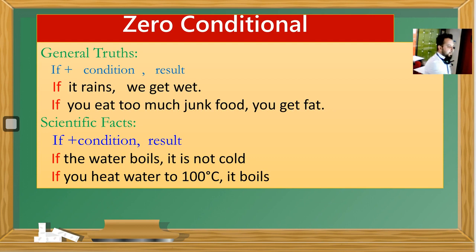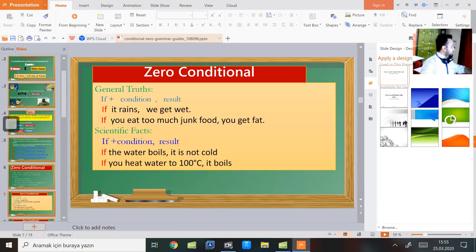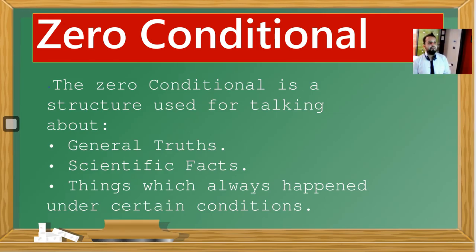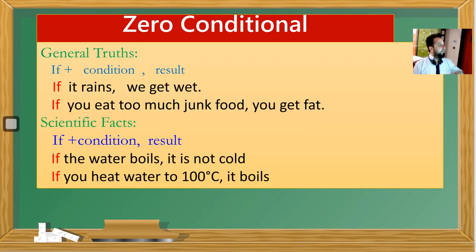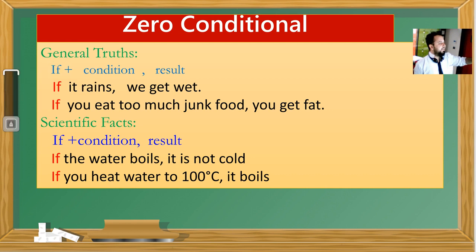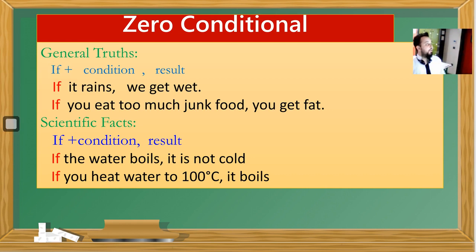Let's begin with the zero conditional. The zero conditional is a structure used for talking about general truths, scientific facts, and things which always happen under certain conditions. Yani zero conditional'ı kullanma amacımız: genel doğruları, bilimsel gerçekleri ve belirli şartlar altında gerçekleşen olayları anlatmak için kullanıyoruz. For general truths, the formulation is: if + condition, then the result clause. Example: 'If it rains, we get wet.' Our condition is raining; our result is getting wet. It's a general truth — everyone knows it.